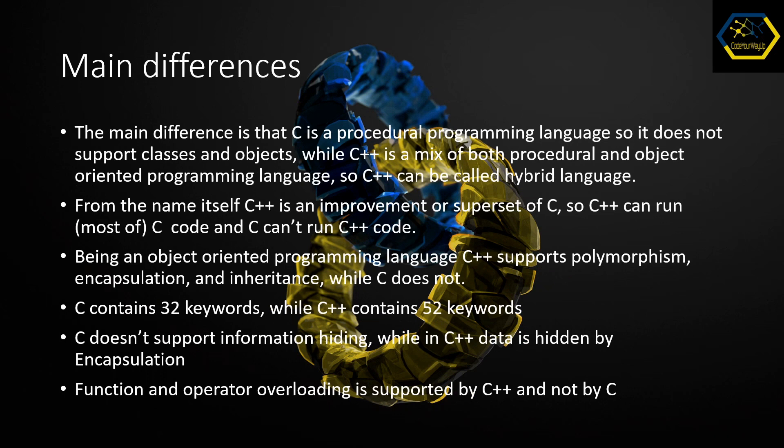About differences: the main difference is that C is a procedural programming language, so it doesn't support classes and objects, while C++ is a mix of both procedural and object-oriented programming, so C++ can actually be called a hybrid language. From the name itself, C++ is an improvement or a superset of C, so C++ can actually run most of the C code, but C cannot run C++ code.